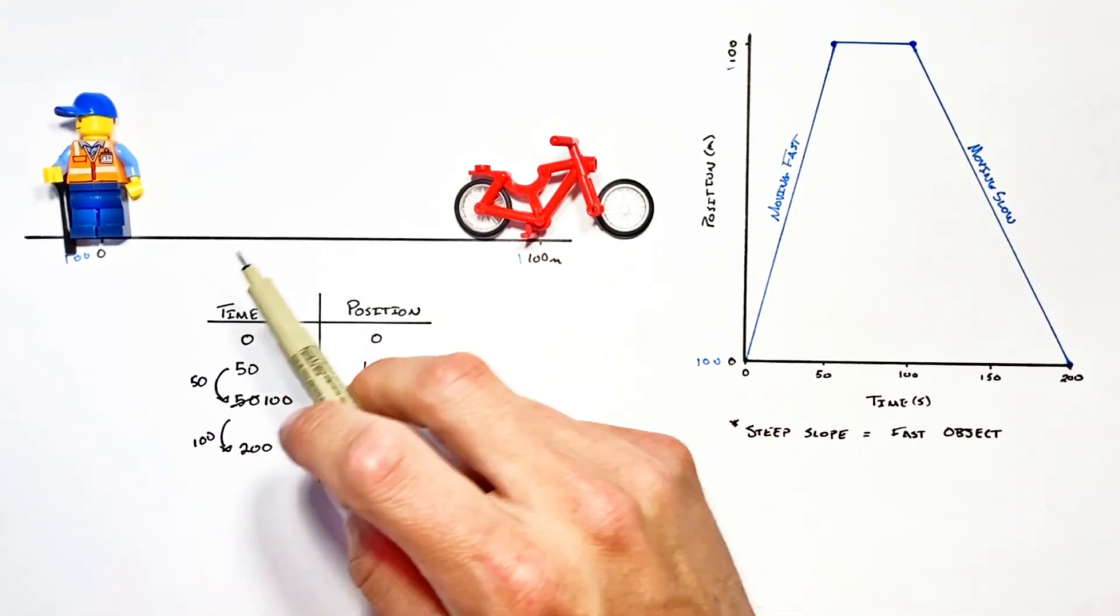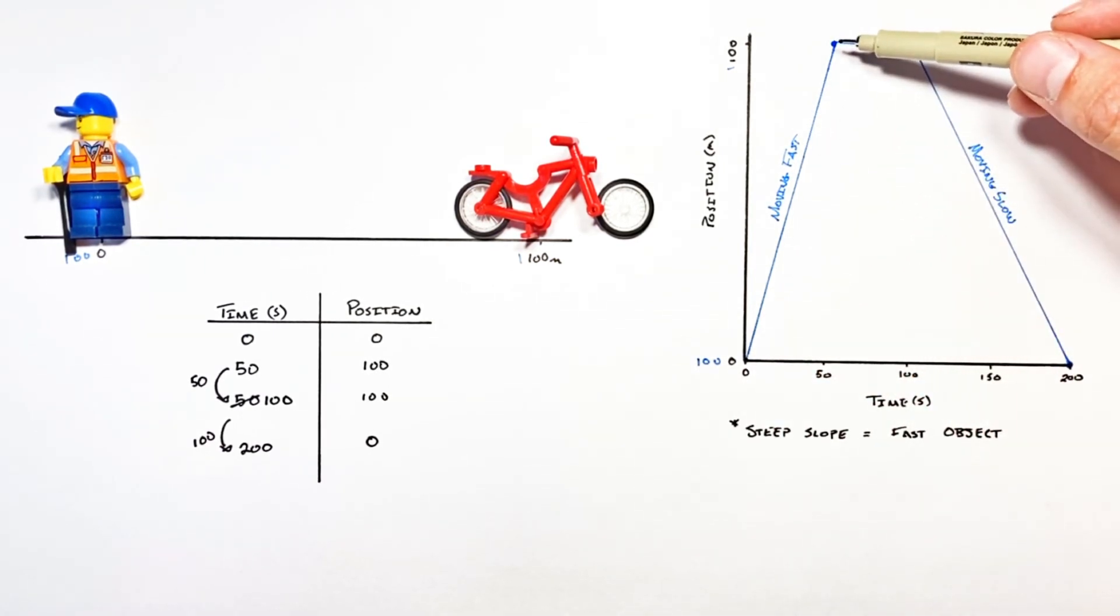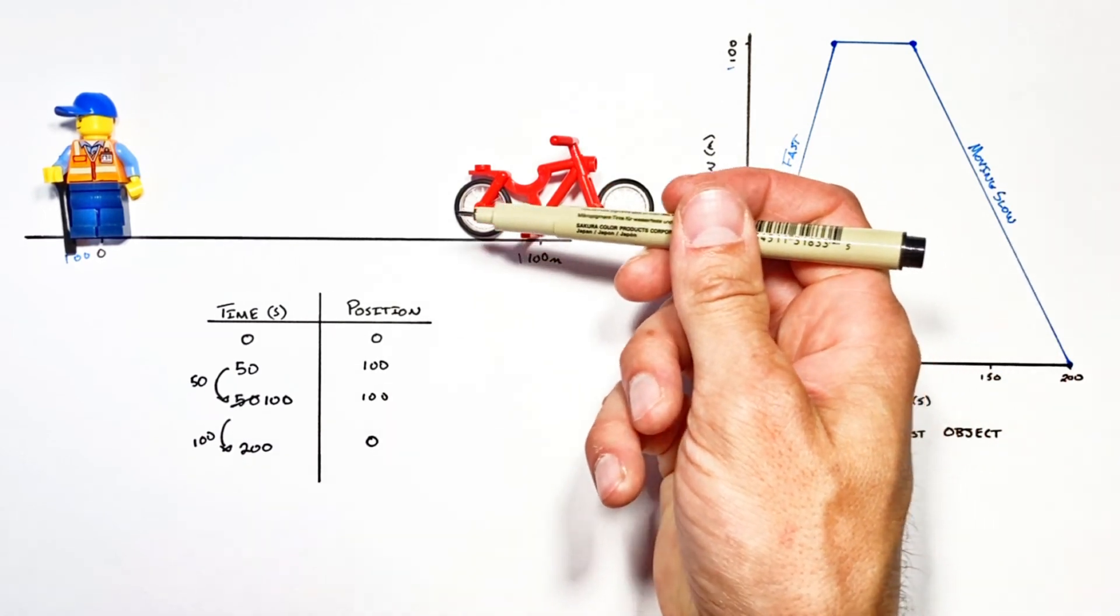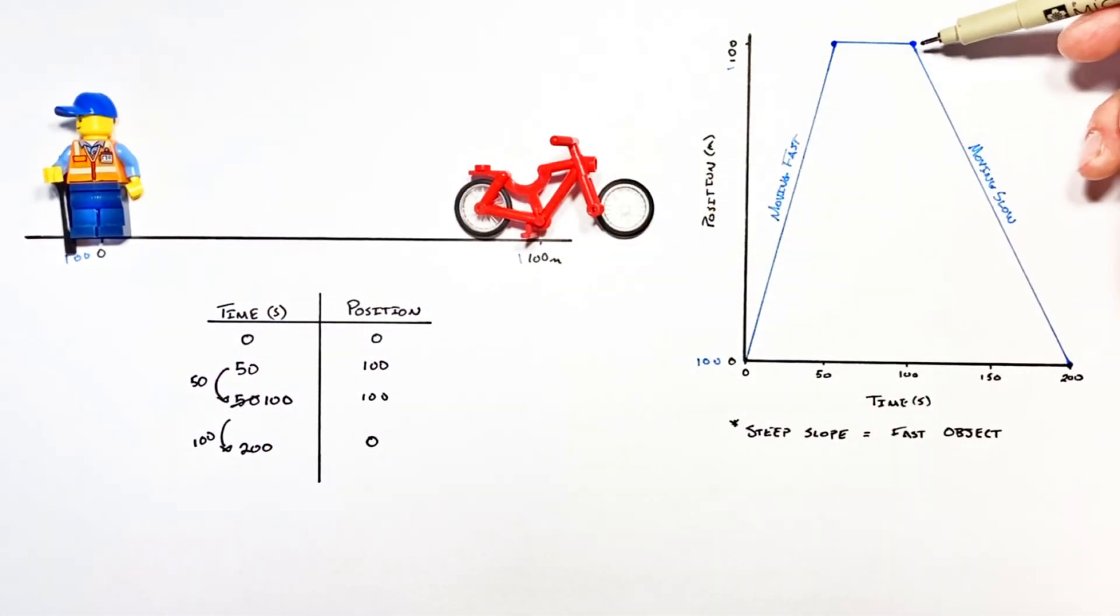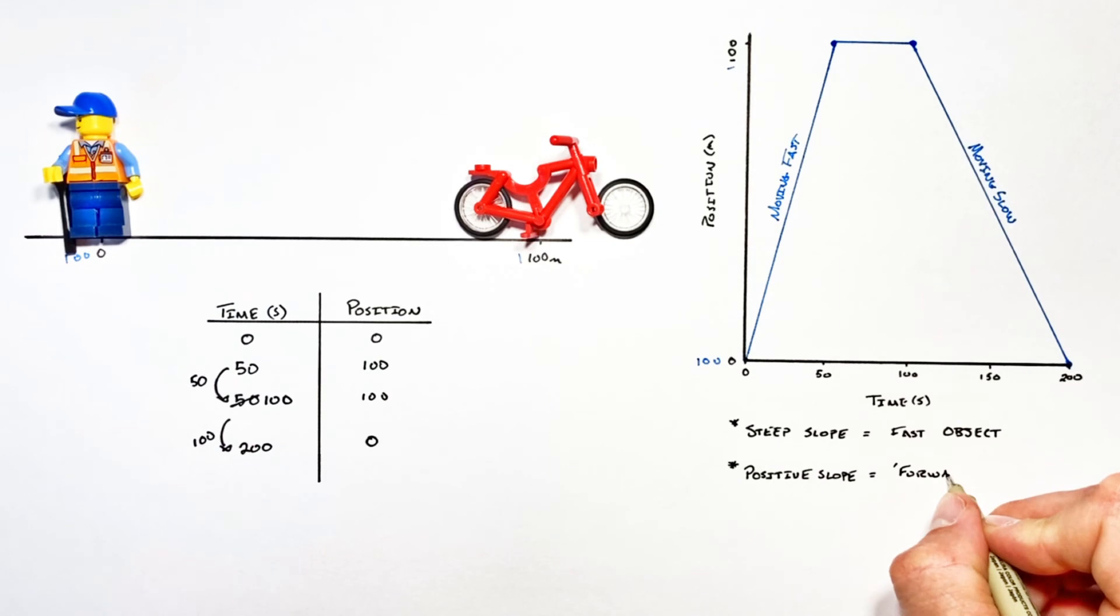Now the other thing to point out here was that as our little dude was riding along on his bicycle his position was increasing and that resulted in a positive slope on the graph. As he was walking backwards his position was decreasing and that was resulting in a negative slope on the graph. So you could say an object is moving forward when the slope is positive or backwards when the slope is negative.